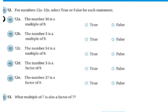Next, for numbers 12A through 12E, select true or false for each statement. The number 36 is a multiple of 9. That is true. The number 3 is a multiple of 9. That is false. The number 54 is a multiple of 9. That is true. The number 3 is a factor of 9. That is true. The number 27 is a factor of 9, and that is false.